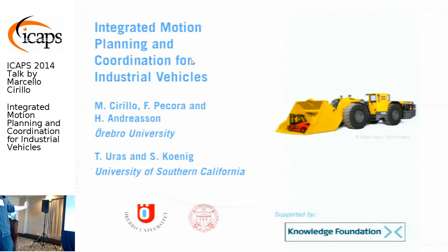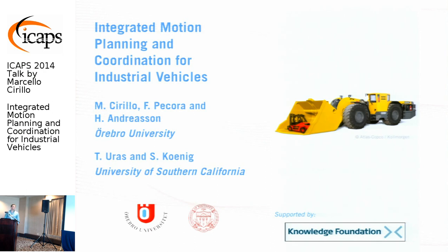Our next speaker is Marcello, and he'll be telling us about integrated motion planning. This work has been done in cooperation with colleagues at Örebro University in Sweden and with Sven Koenig and Dan Zeluras at the University of Southern California. This is part of a larger project running for three years, and a successor will start in September about coordination of a fleet of autonomous vehicles.